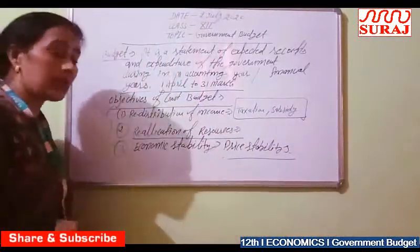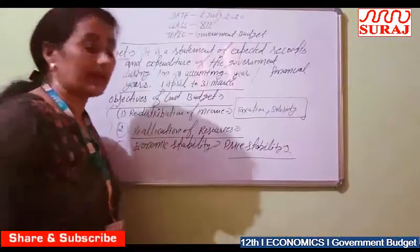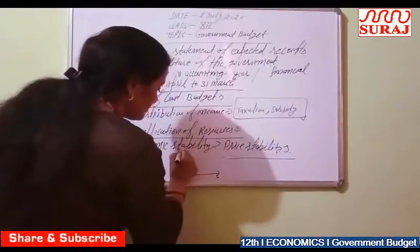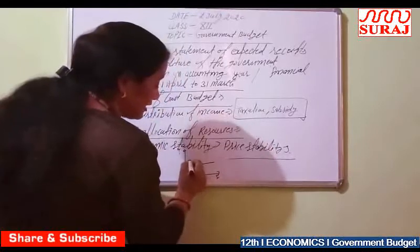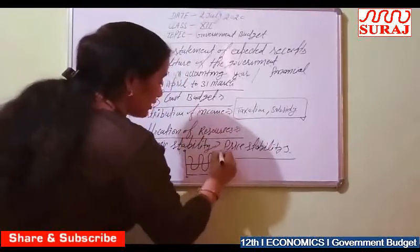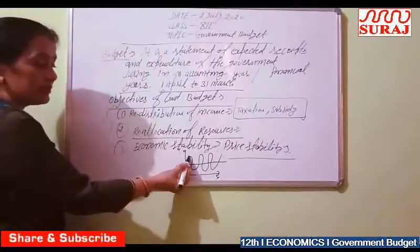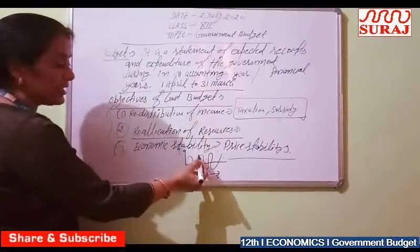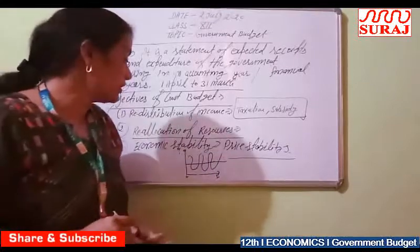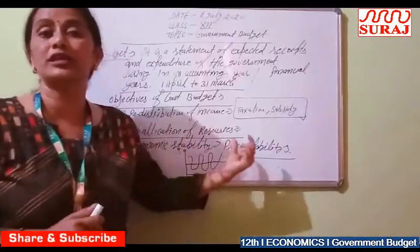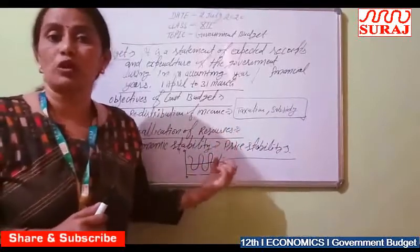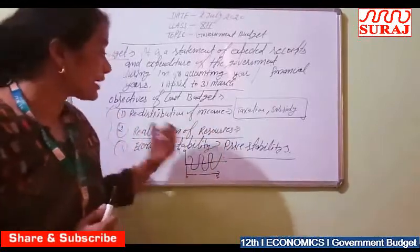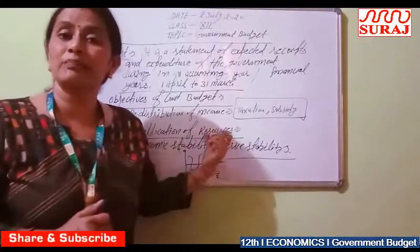The price level in our country does not remain constant. Trade cycles keep occurring in our economy — there is a situation of boom, then recession comes, then recovery happens, then boom again. In our economy, the situation of boom, recession, and recovery is a continuous process. The price cannot remain stable, but the government tries to stabilize the price level in our economy through their budgetary policy.